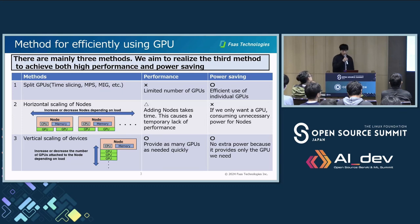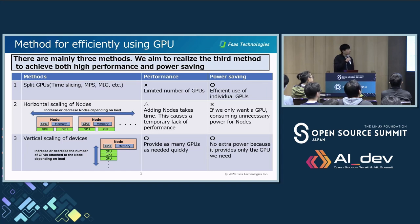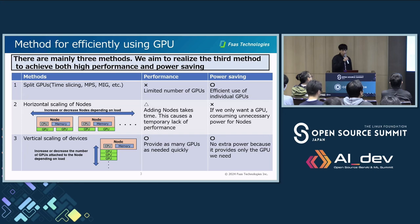There are mainly three methods for using GPUs efficiently. We aim to realize the third method to achieve both high performance and power saving. The first one is splitting the GPUs by several ways and allowing multiple processes to use it so that GPUs can be used efficiently. However, it cannot provide more performance than the number of GPUs attached to the server.